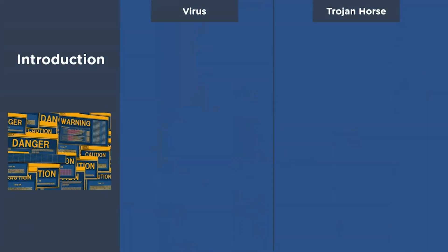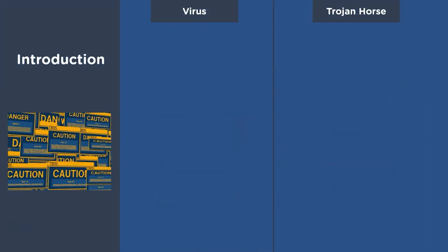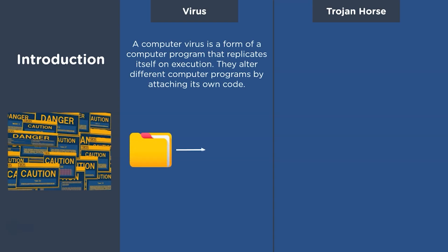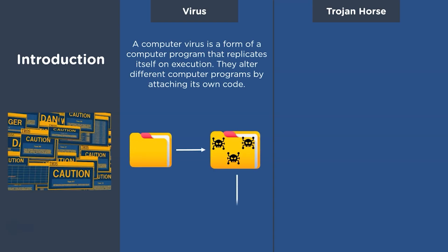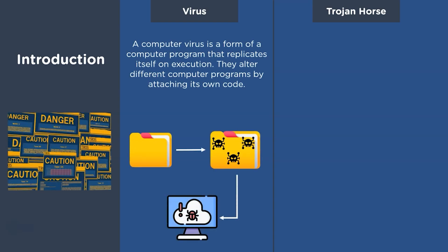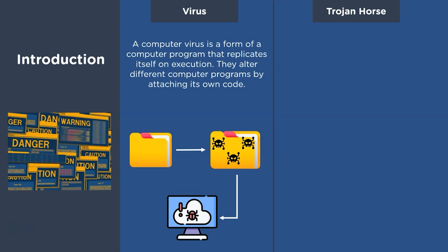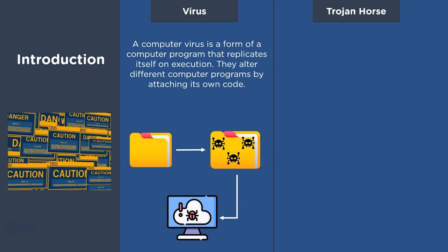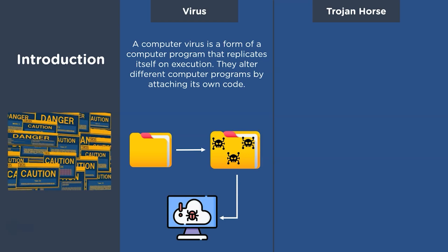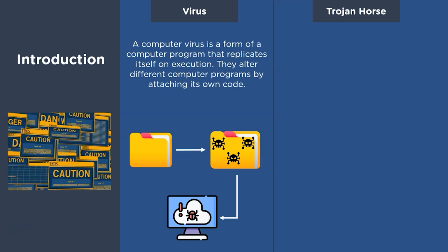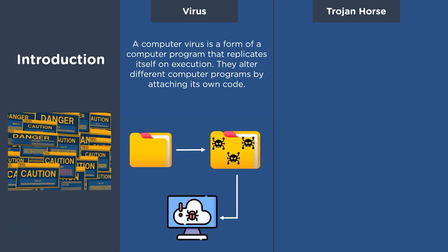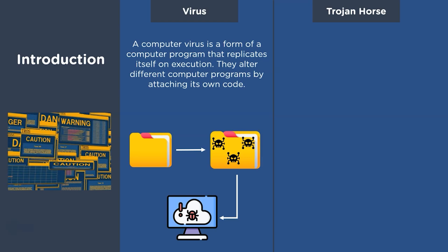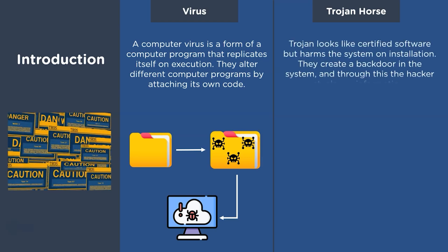First, let's look at what exactly is a virus program. A computer virus is a type of malicious program that, on execution, replicates itself. Viruses get attached to different files and programs — termed as host programs — by inserting their code. If the attachment succeeds, the targeted program is said to be infected with a computer virus.